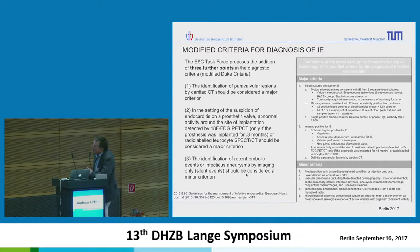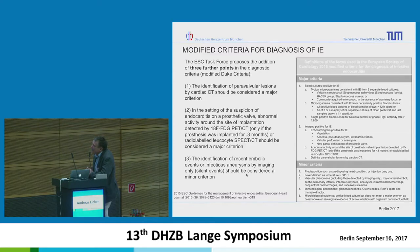The identification of paravalvular lesions by cardiac CT should be considered a major criterion, especially for the aortic valve in the setting of suspected endocarditis on a prosthetic valve. Abnormal activity around the site of implantation detected by PET scan or SPECT more than three months after operation should be a major criterion. Identification of recent embolic events or infectious aneurysms by imaging only as silent events should be a minor criterion.